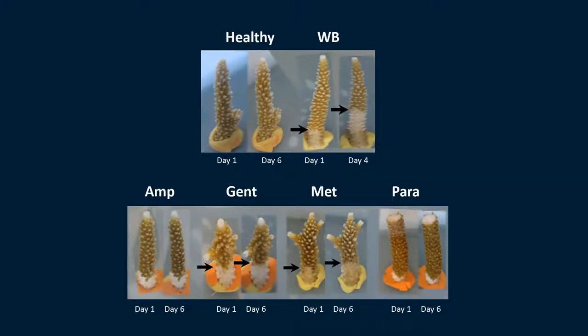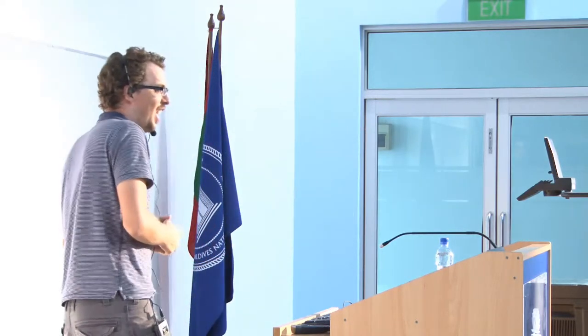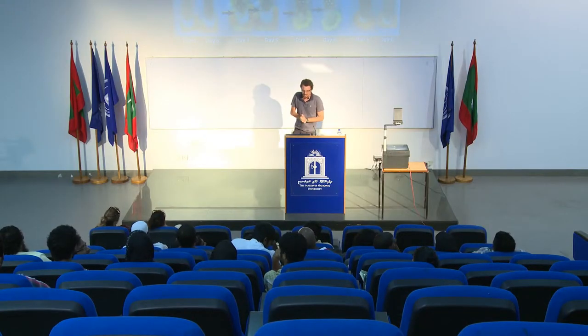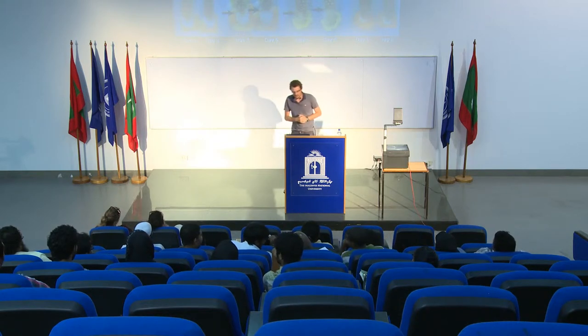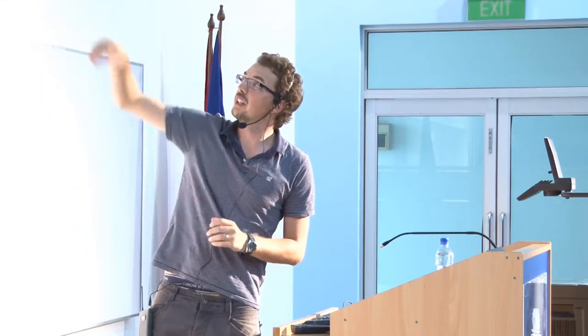That's what happens in a lot of tank experiments. As you can see, the different treatments — ampicillin, gentamicin, metronidazole, and paramycin — show that ampicillin and paramycin, the two ends, actually cured the disease. We treated the disease successfully. Gentamicin and metronidazole showed tissue continuing to increase — the rate of tissue loss slowed down, but the disease was still clearly advancing throughout the entire experimental period.